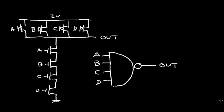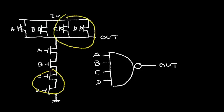So far I've shown two-input NAND and NOR gates. This shows how we can make a four-input NAND gate — it's very simple. We just add more series transistors and more parallel transistors. For a four-input NOR gate, we would add four series PFETs and four parallel NFETs.